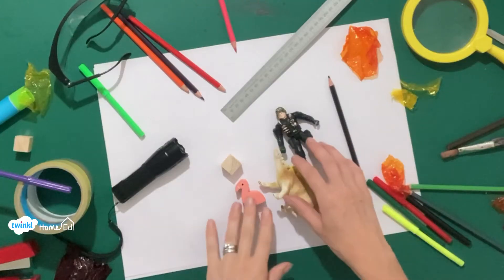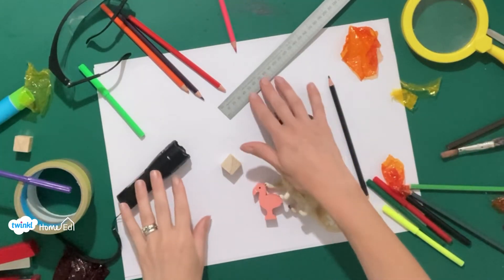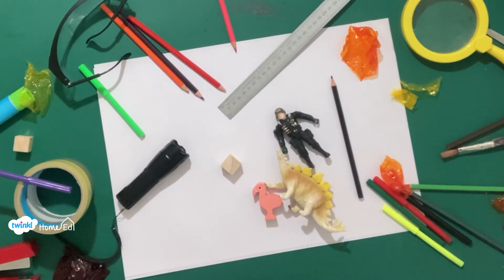This is such a brilliant playing with science because you don't actually need very much equipment at all. I've got a few objects, a torch, a ruler, and some pencils, but actually you could just go outside to look at shadows or just look around wherever you are.